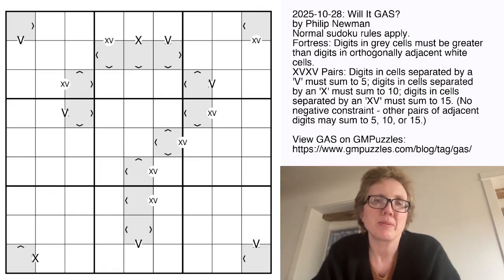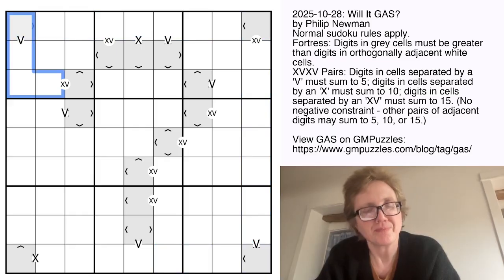We have normal Sudoku rules, placing the digits 1 through 9 once each in each row, each column, and each outlined 3x3 region. And then we also have some X's, some V's, and some XV's marked in the grid.